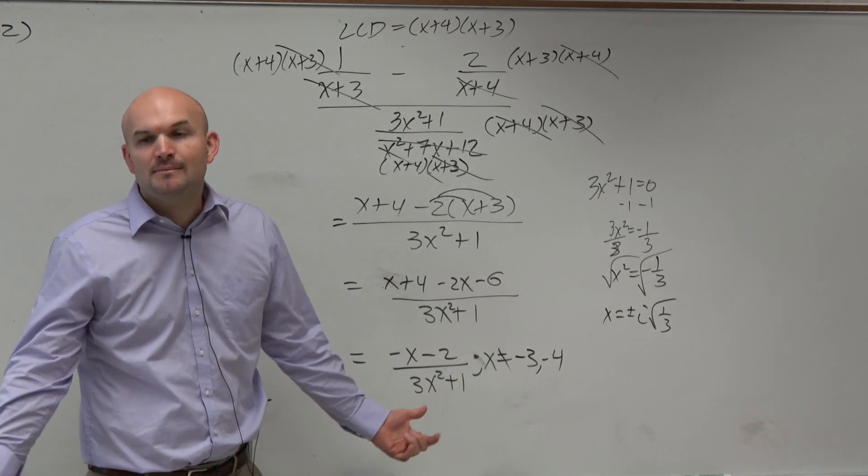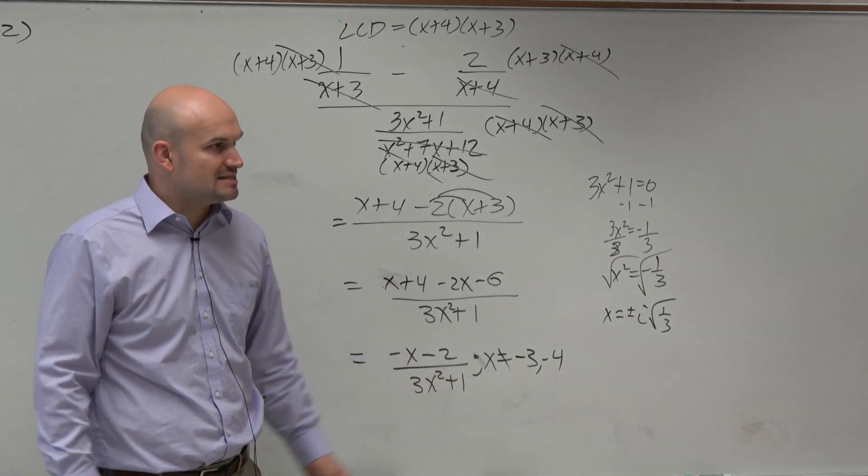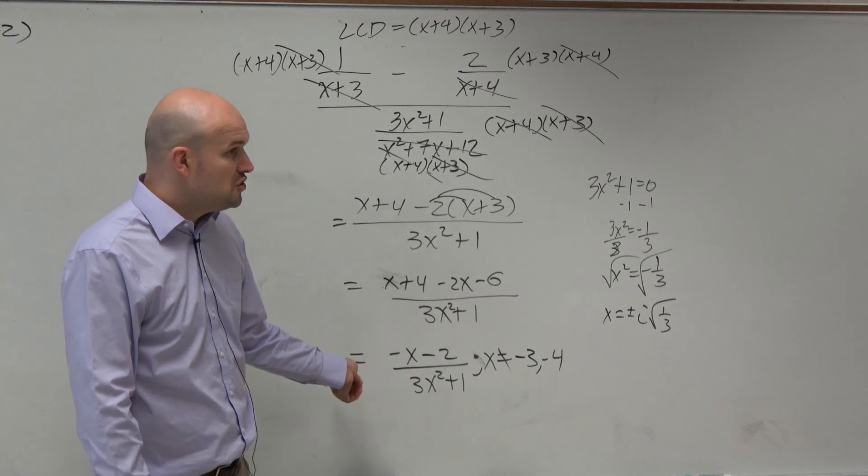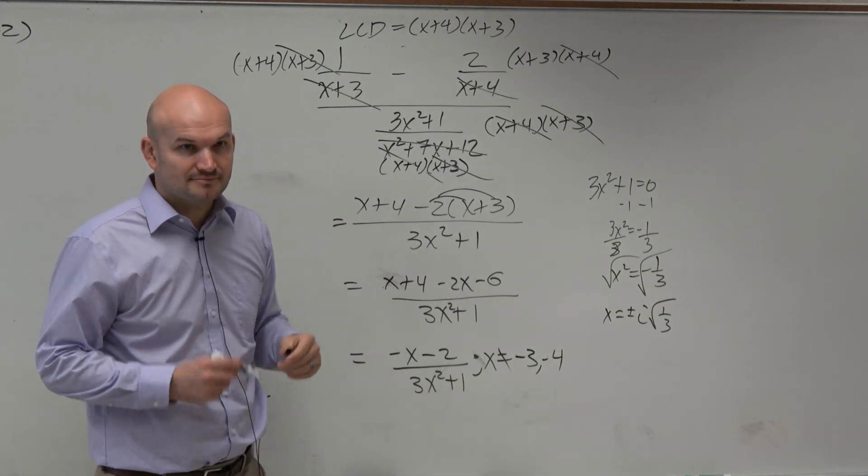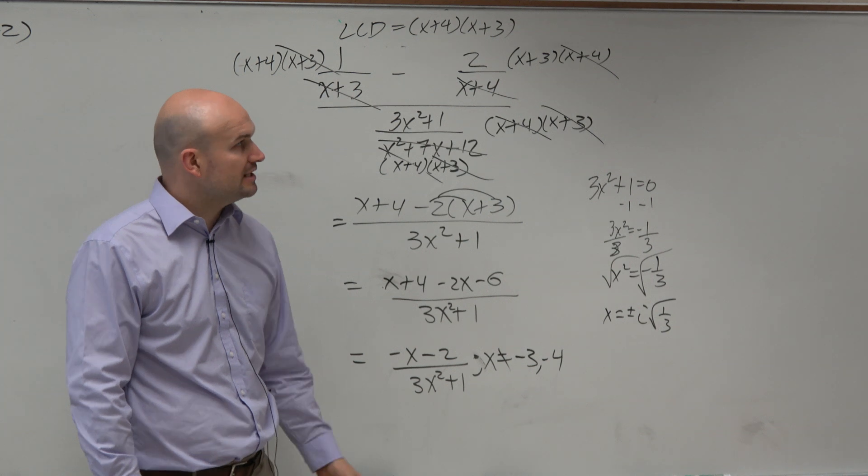No, we just want to exclude our real numbers, right? The real numbers that make the denominator 0. So therefore, we can just ignore that. And we just say the only excluded values would be negative 3 and negative 4.